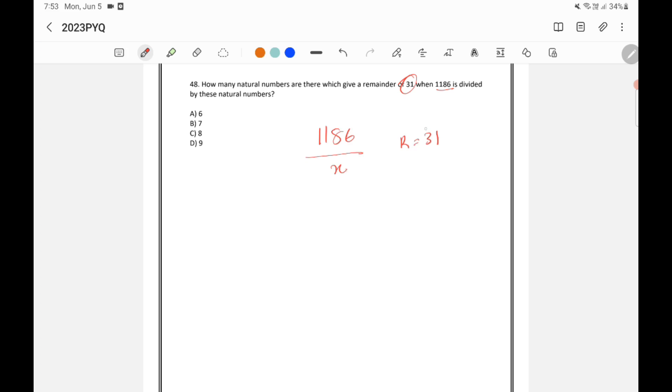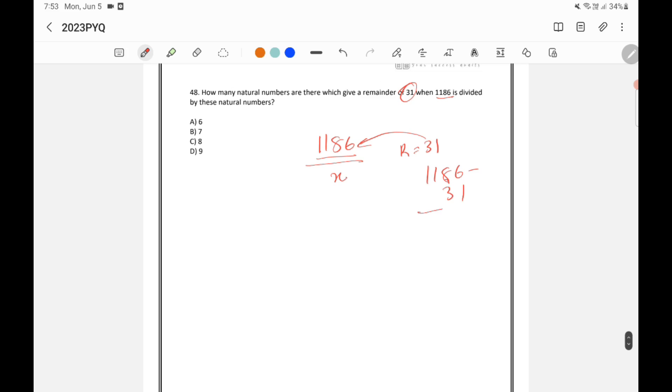If I subtract 31 from 1186, then that number will be exactly divisible by x. So 1186 minus 31 is 1155. So 1155 will be exactly divisible by x.